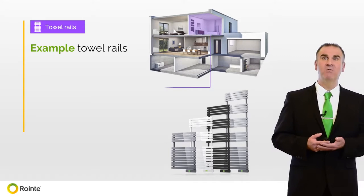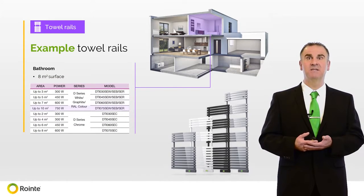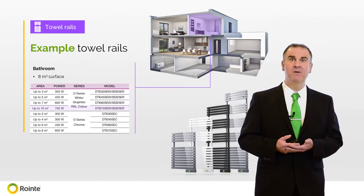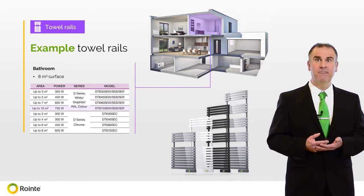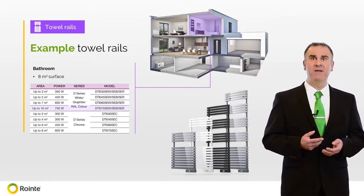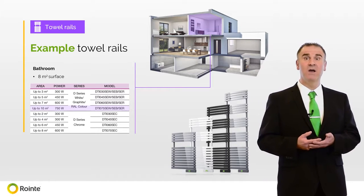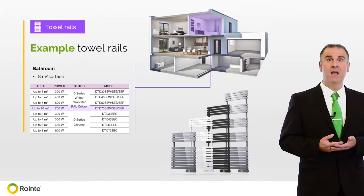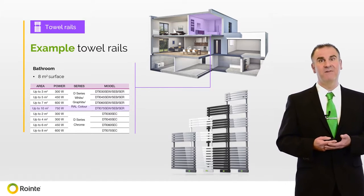Rowente have towel rails in both the Kiros and D-series ranges. The towel rail sizes are recommended by area, and sizing is also dependent on the finish of the towel rail. This example shows a bathroom with a surface area of 8 square metres. We recommend a 750-watt Kiros in white, or a 750-watt D-series in graphite, white, or any rail colour. Again, if there is any doubt, please contact our technical department for advice.